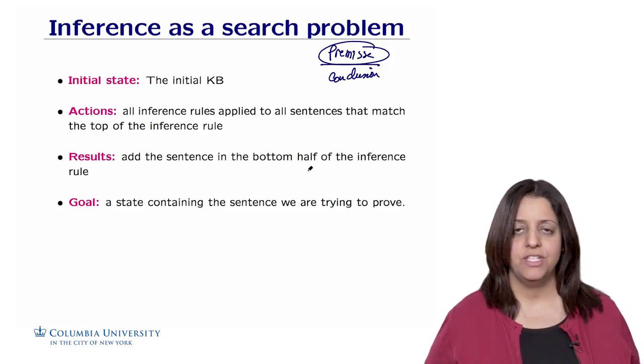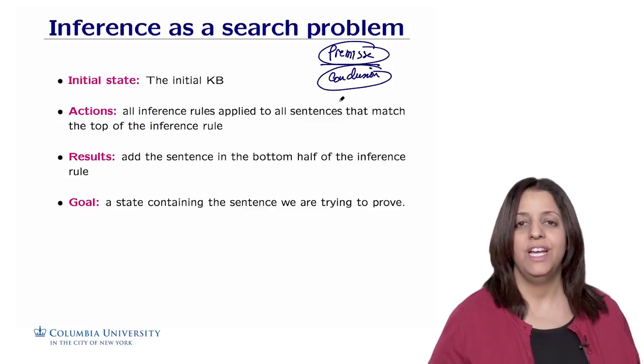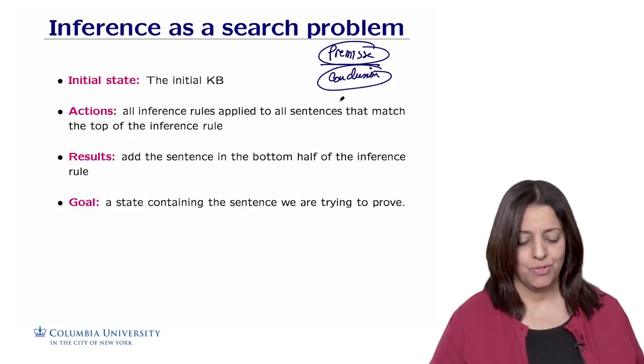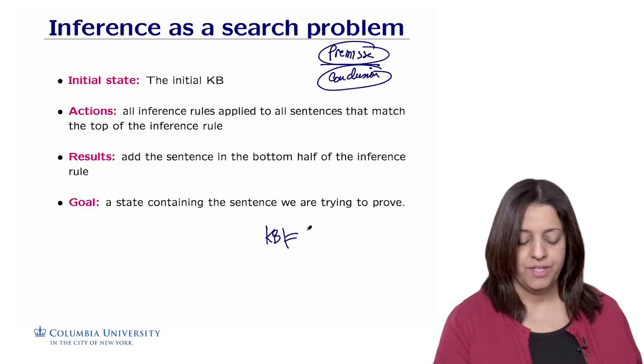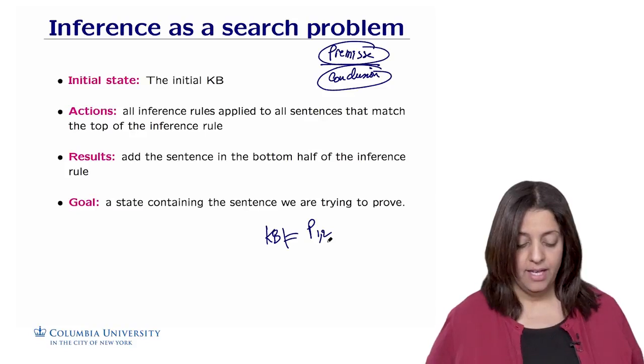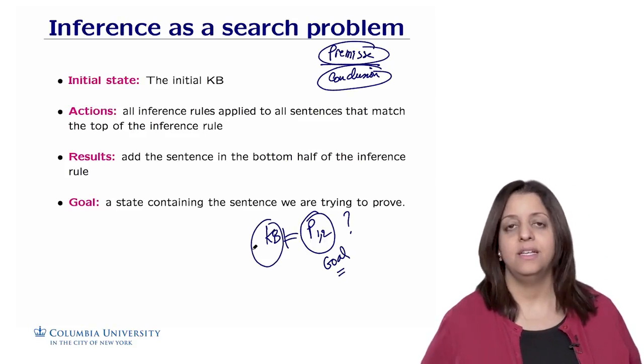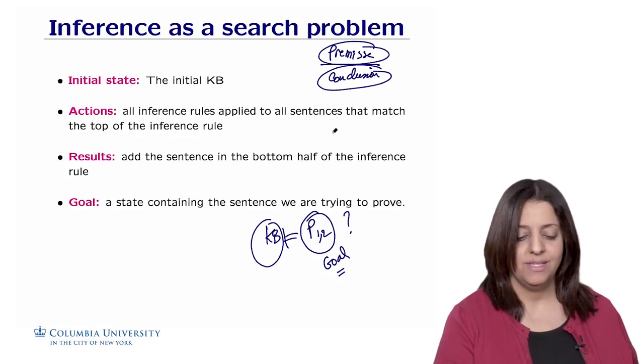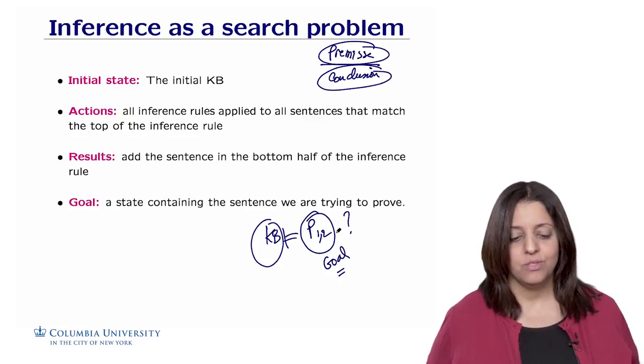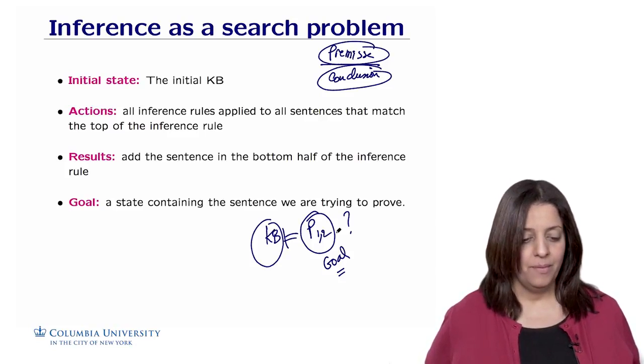We're going to apply the set of actions, which would be all the inference rules that are applied to all sentences that match the premise of the inference rule. The result would be to add the sentence that is in the bottom half. Whatever conclusion you get, you're going to add that as a result to the knowledge base. The goal would be a state containing the sentence we are trying to prove. For example, in the previous example, I wanted to find whether KB entails p12 or p22, you know, the four possibilities. So suppose we have KB and I wanted to know whether KB entails p12, so I just need to focus on this one as the goal. Start this as the initial state and try to apply all possible rules until I reach the result p12 or the negation of p12. It's possible to use any search problem algorithm to reach the goal of doing inference just based on the syntax, without using any model checking.